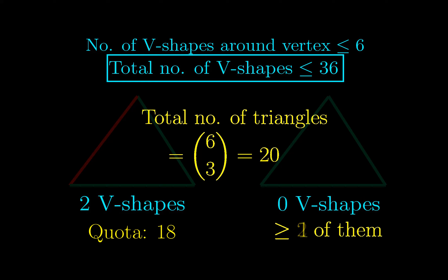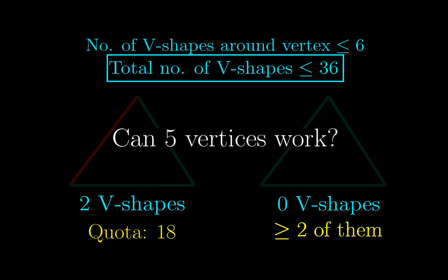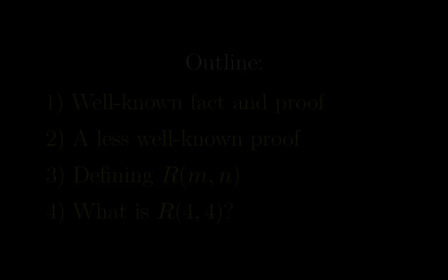The fact only requires us to show at least 1 of the type with 0 V shapes, but now this proof tells us that we can say something stronger. There are at least 2 triangles of this type. Since we have proved more than we want, it is natural to ask whether 5 vertices still work, which brings us to the definition of the Ramsey numbers.